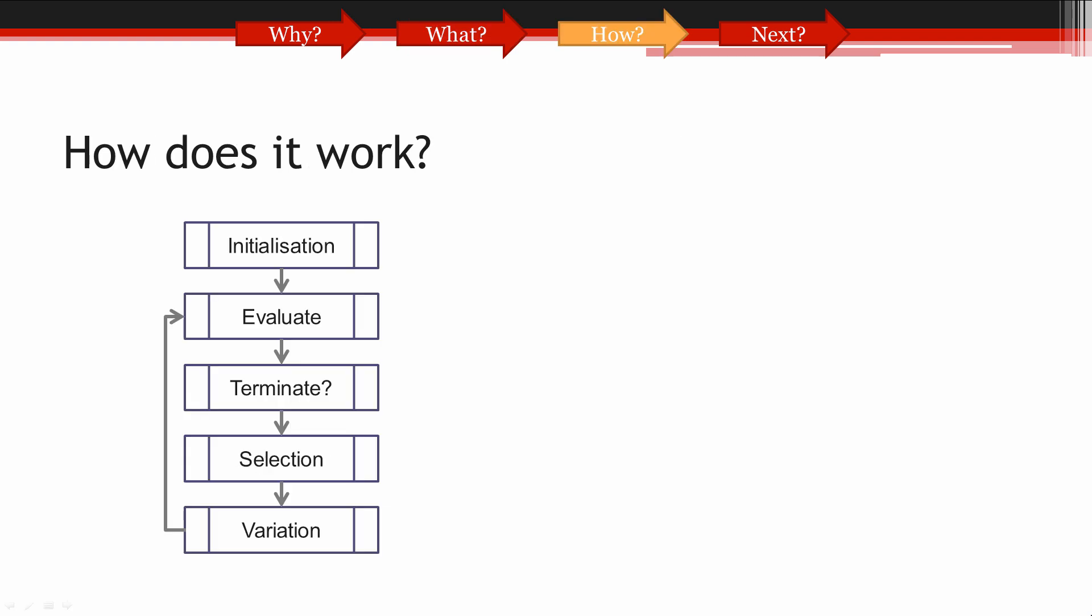How does an evolutionary algorithm actually work? Here you can see a flow diagram of a simple evolutionary algorithm. You can see different stages which flow down to the bottom and then loop up back near the top. Let's go through each step one by one whilst working through an example.